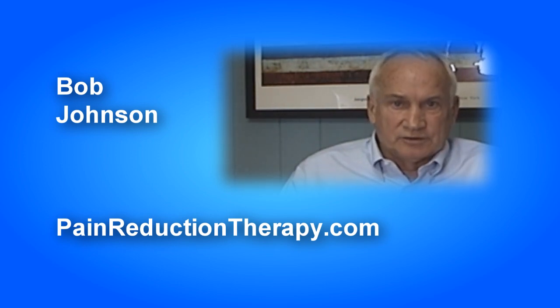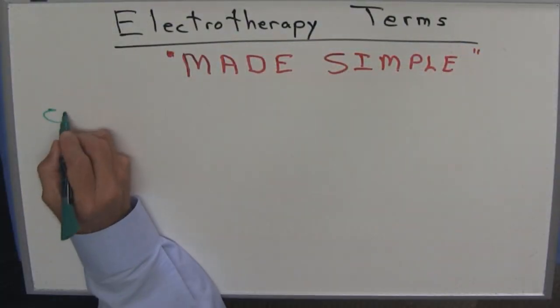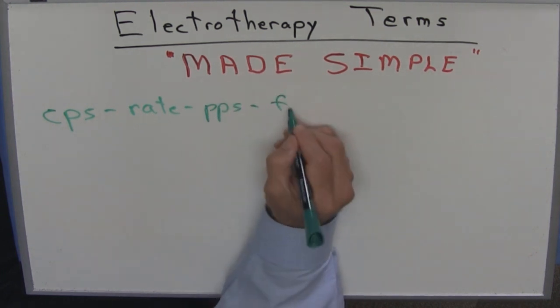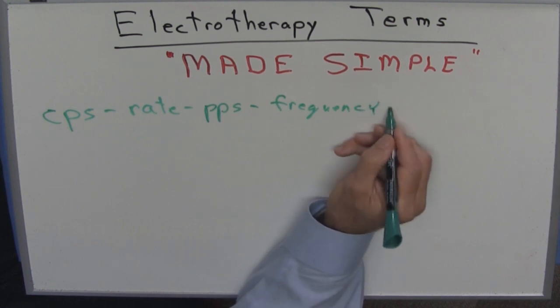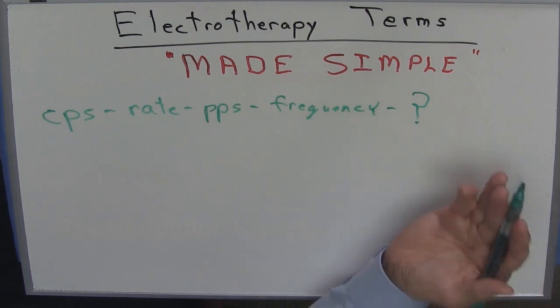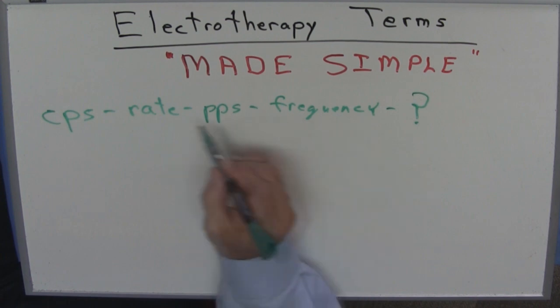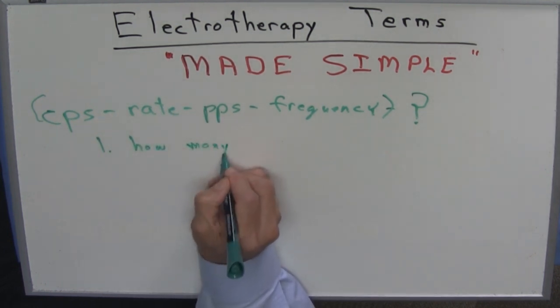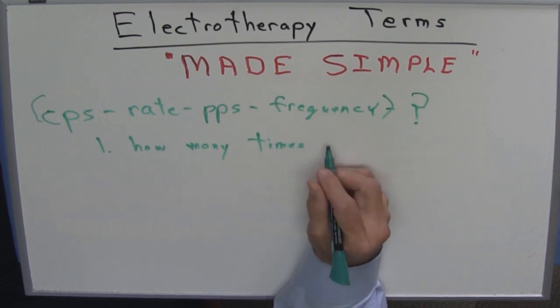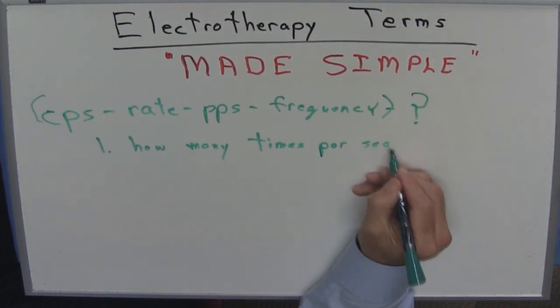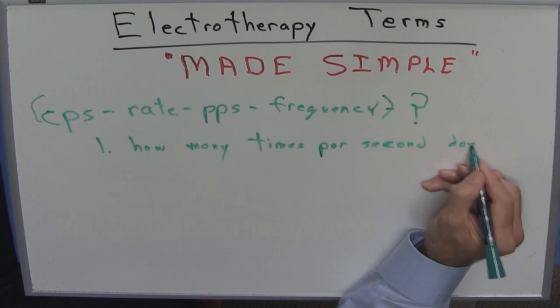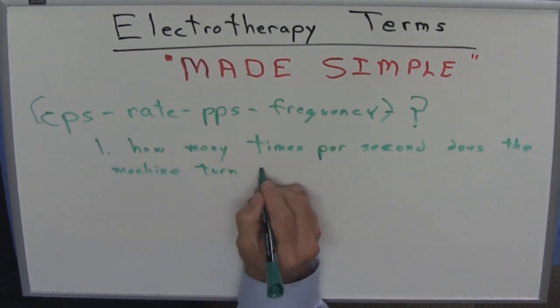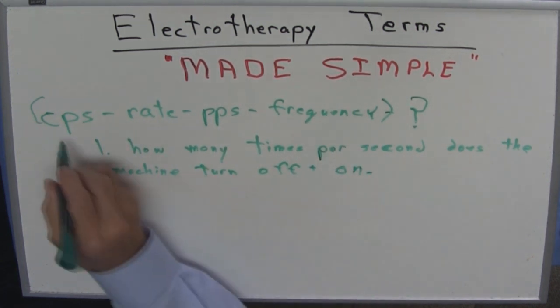And it is so hard to make a comparison because one group will be talking about something called CPS. Another group will say rate. Another group will say PPS. Another comparison will say frequency. And there's more I could put on here. Question is, what are these things? What do these things mean? Well, let me tell you what every one of these things means. It means one thing. How many times in this type of instrument per second does the machine turn off and on? That's all that means.